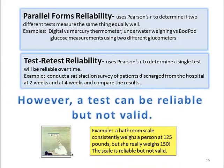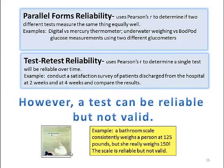However, a test can be reliable but not valid. For example, a bathroom scale consistently weighs a person at 125 pounds, but that person really weighs 150. The scale is reliable in that it measures the person at 135 every time, but it's not a valid tool.